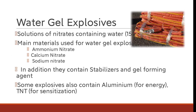Water gel explosives are solutions containing approximately 15% water and nitrates. The main materials used in water gel explosives are ammonium nitrate, calcium nitrate, and sodium nitrate. They contain water and are solutions of nitrates. In addition, they contain stabilizers and gel-forming agents. Some explosives also contain aluminum for energy and TNT for sensitization.